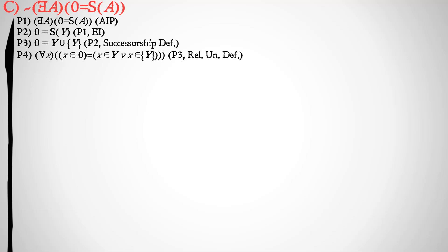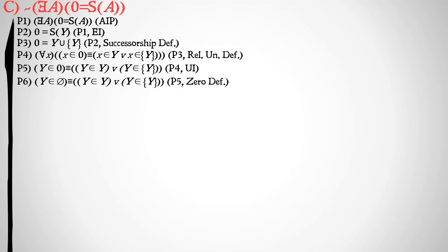Next, we apply the relative union definition, giving us Y union the set of Y. We split that out into something we can work with: for all X, X is a member of zero if and only if X is a member of Y or X is a member of the set of Y. We universally instantiate X to Y throughout this proof.